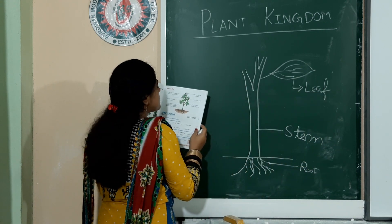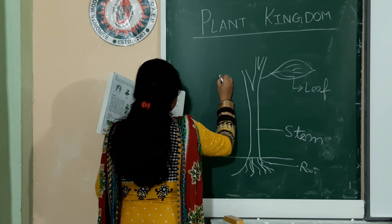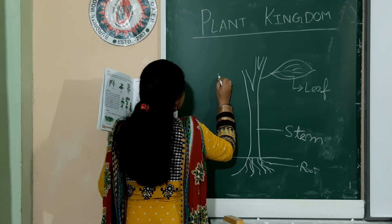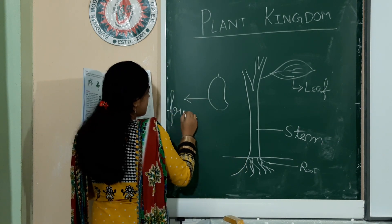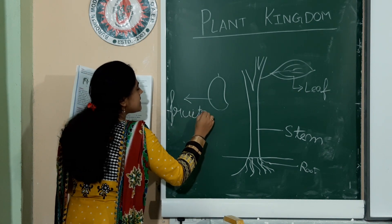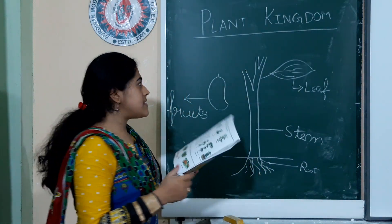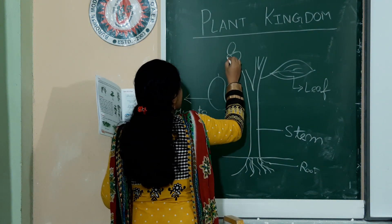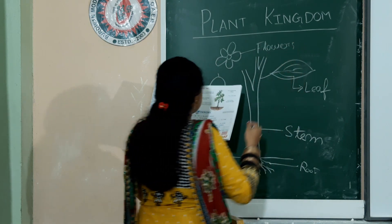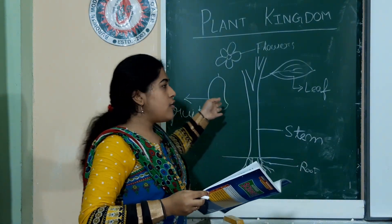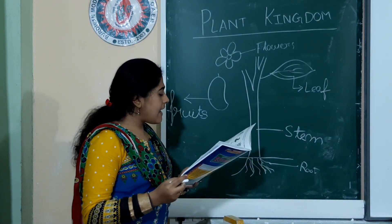Fruits — we all eat fruits and they have seeds. I will draw a mango fruit. This is called a fruit, and it has seeds. Next is the bud — it grows into flowers. The flower then changes into fruit.